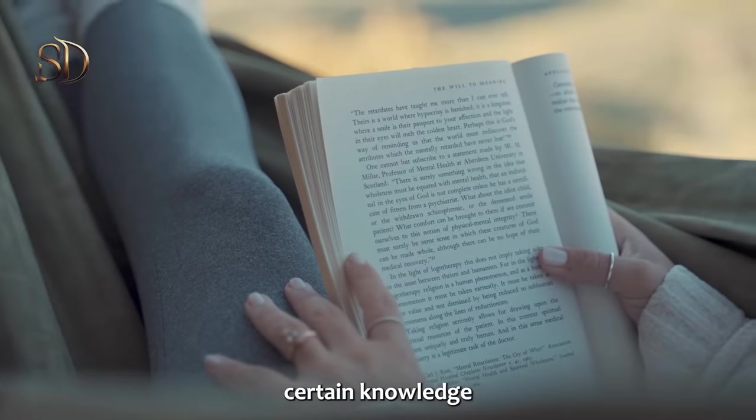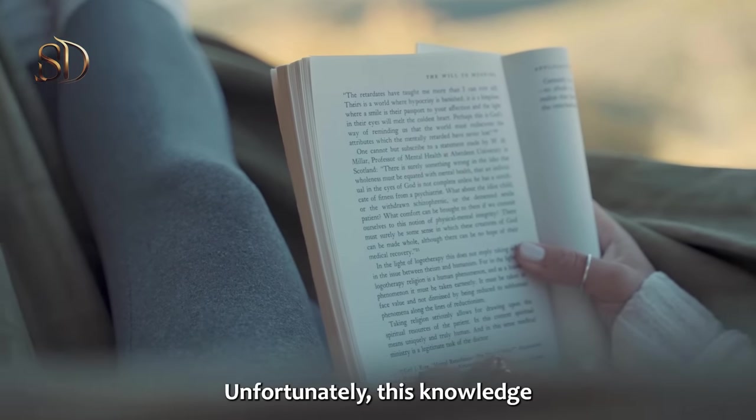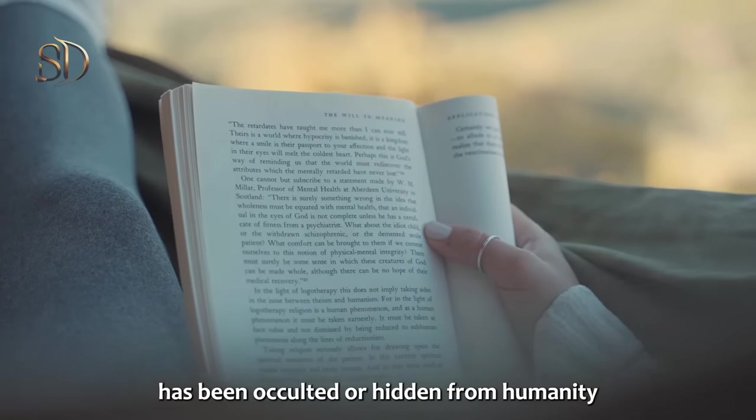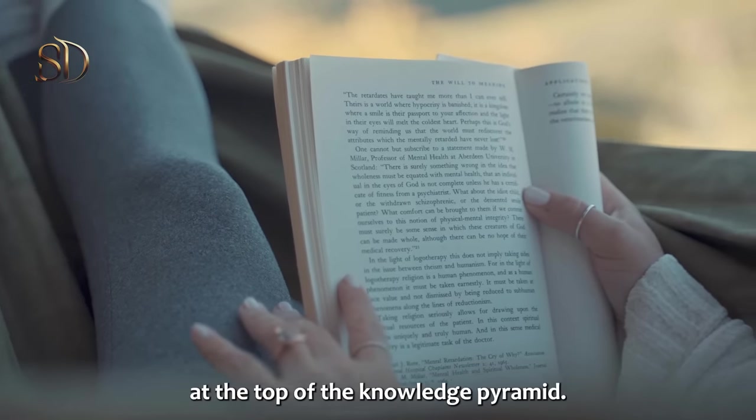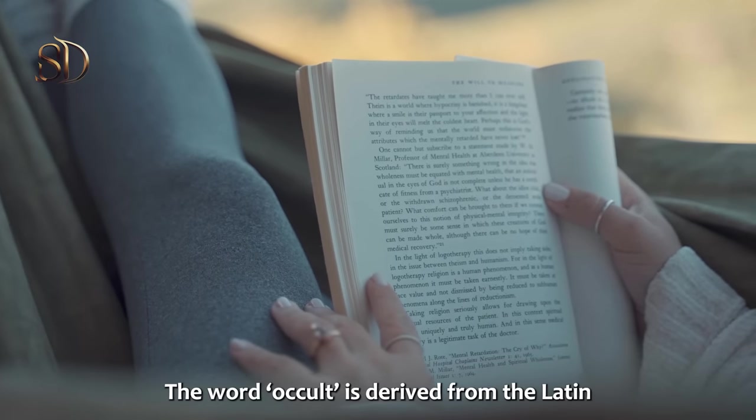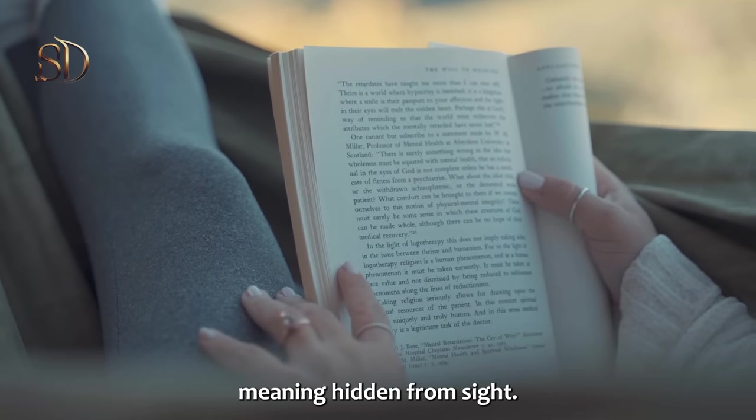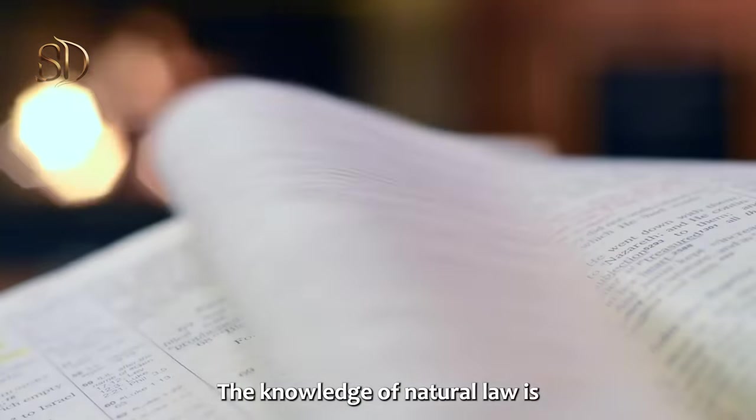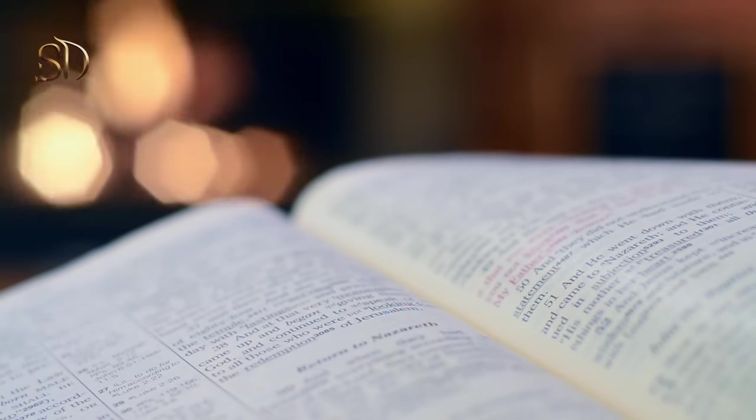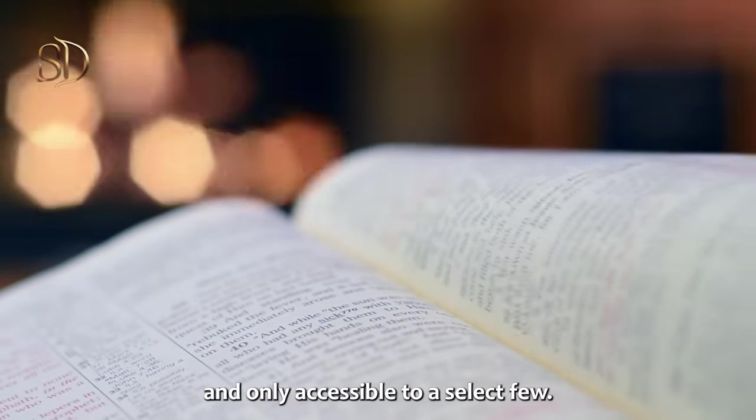We must acquire certain knowledge that will spur us into action. Unfortunately, this knowledge has been occulted, or hidden from humanity, and is held by only a few at the top of the knowledge pyramid. The word occult is derived from the Latin adjective occultus, meaning hidden from sight. The knowledge of natural law is an example of occulted knowledge. It has been hidden from humanity for centuries and only accessible to a select few.